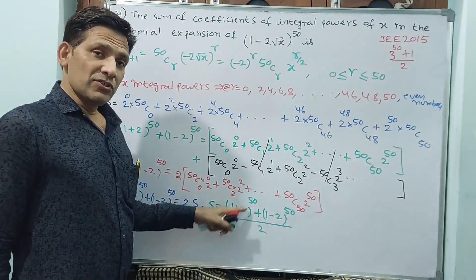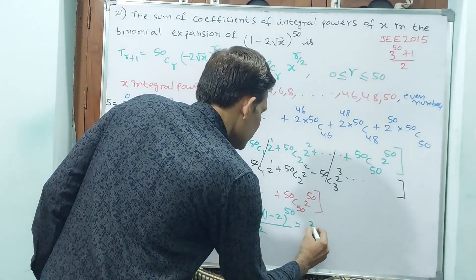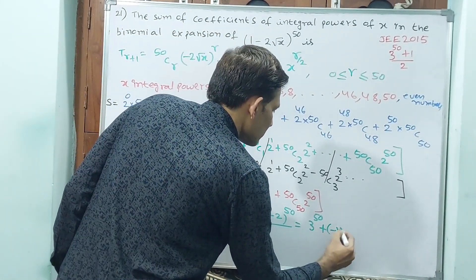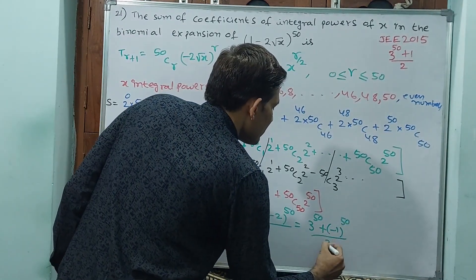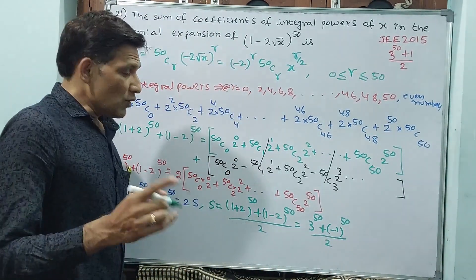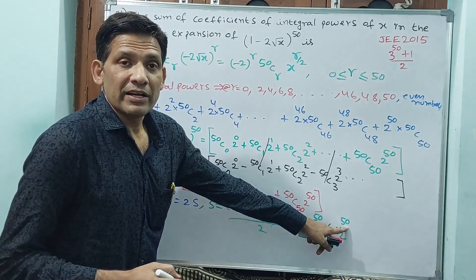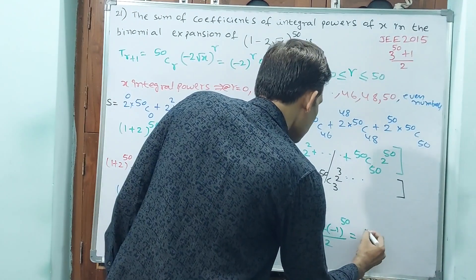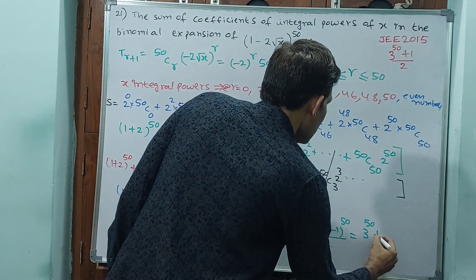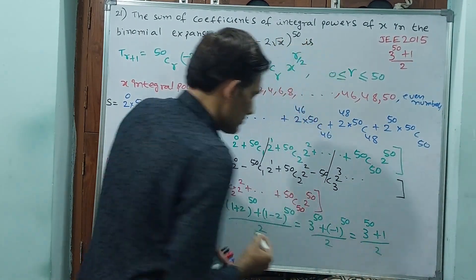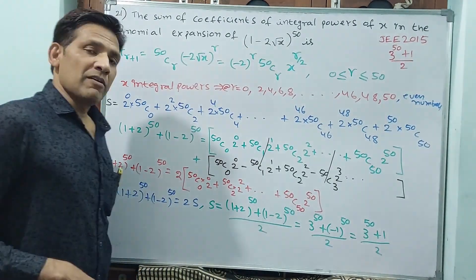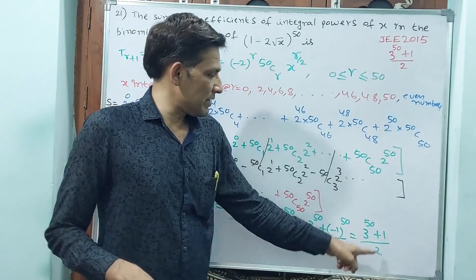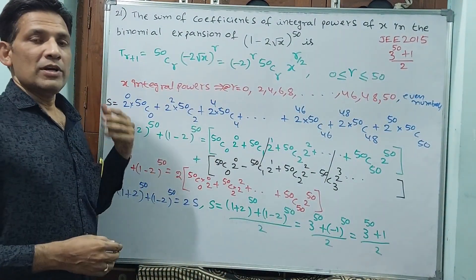Now, 1 + 2 = 3, so (1 + 2)^50 = 3^50. And 1 − 2 = −1, so (1 − 2)^50 = (−1)^50 = 1, since 50 is even. Therefore S = (3^50 + 1) / 2. That is the answer.